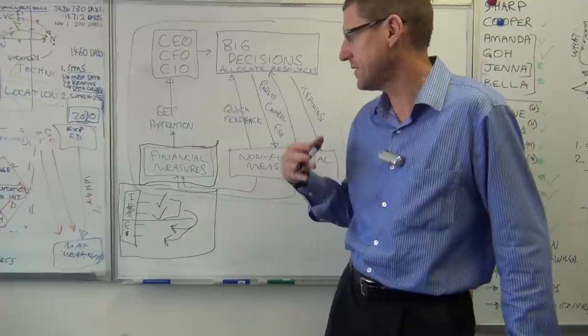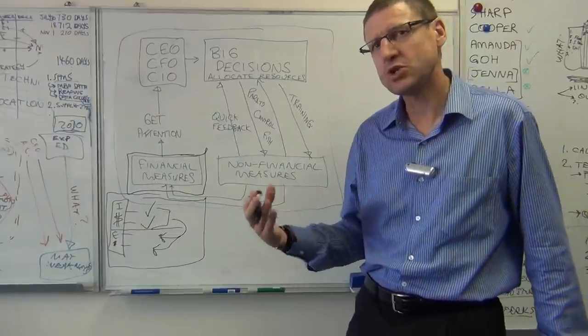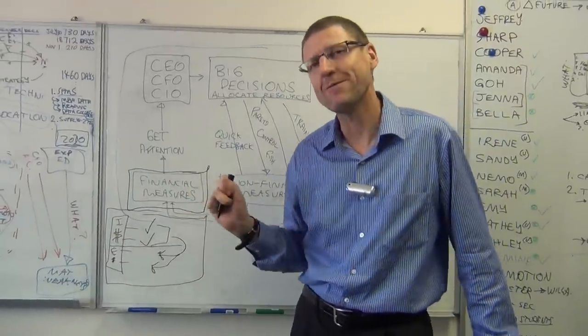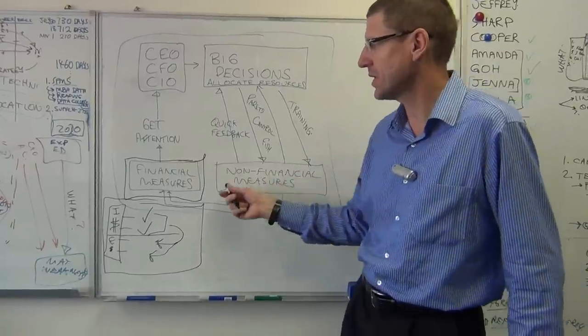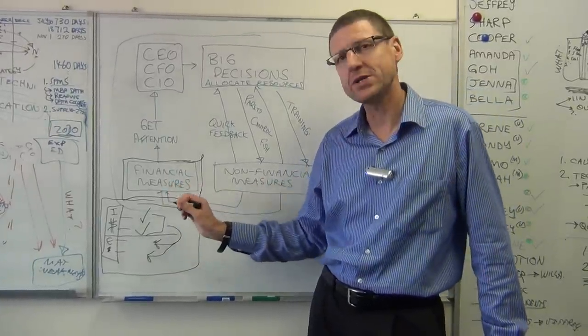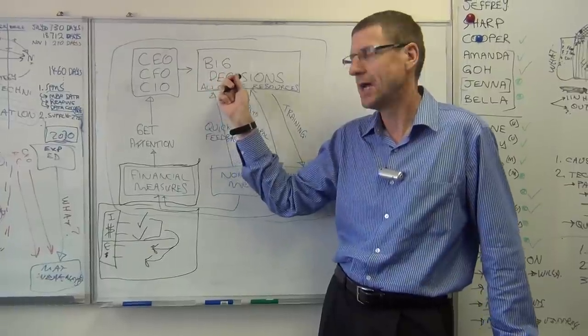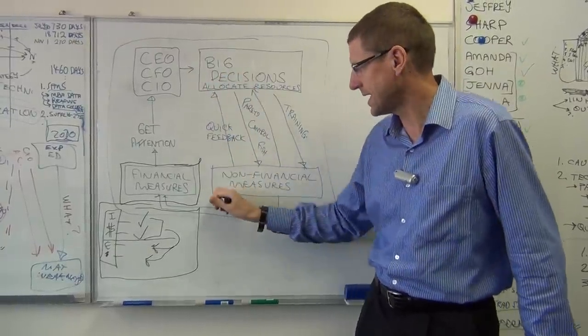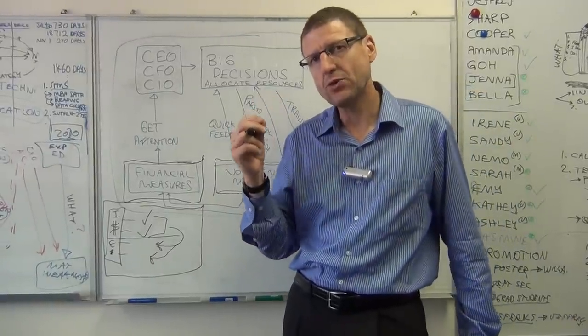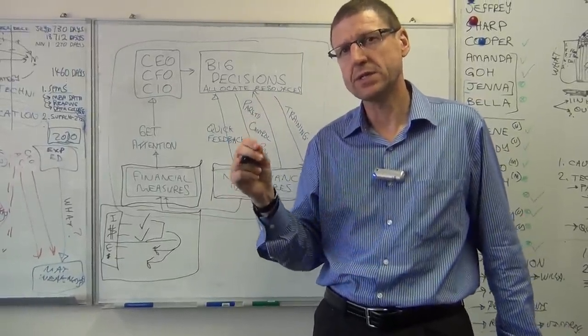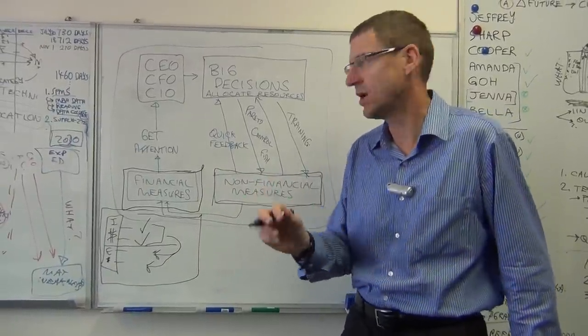So having said that the balanced scorecard is a balance of financial and non-financial, it seems strange that we keep on focusing on financial. And I just want to reiterate the point that in organizations, we use financial measures to get the attention of the big managers who are making the big decisions. After that, non-financial measures become very useful in helping to execute initiatives, helping to give feedback about whether a particular quality initiative is working or not.